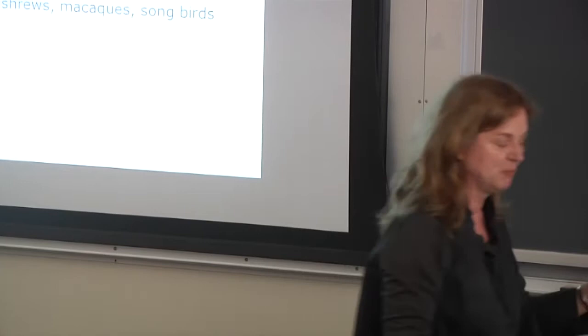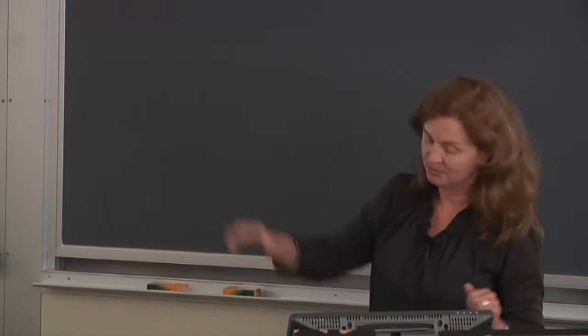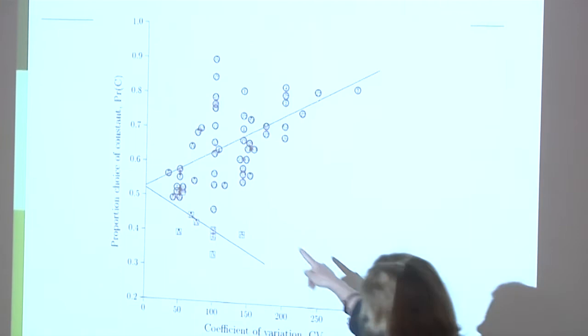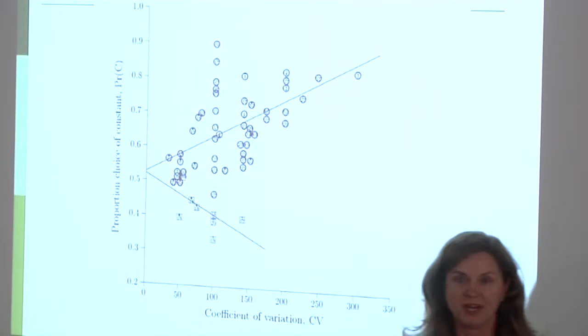So always a sure option, a risky option, same expected value. And of course these normative models were predicting since the expected value was the same, the only determinant of their choice for the risky option should be the variance, and it should basically be decreasing likelihood of going to the risky option in the domain of gains and increasing likelihood in the domain of losses as a function of the variance. So he had found all data sets that had that characteristic, and when he plotted them, it was a complete mess. There was no regularity between risk-taking and the variance of these options. But then at some point he has this insight, why don't I try to use the coefficient of variation?